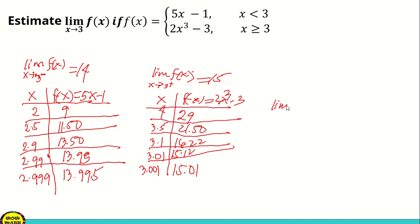Now we can say that the limit of f of x as x approaches to 3 from the left is not equal to the limit of f of x as x approaches to 3 from the right.